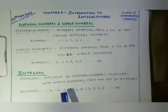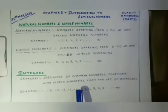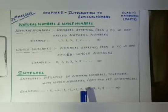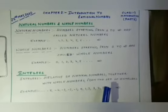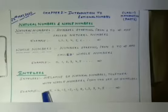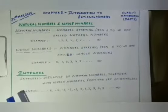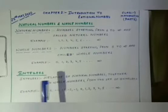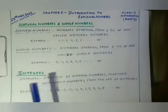Here are some of the integers: minus 5, minus 4, minus 3, minus 2, minus 1, 0, 1, 2, 3, 4, 5, and so on to infinity in both directions. I hope it is clear to everyone.